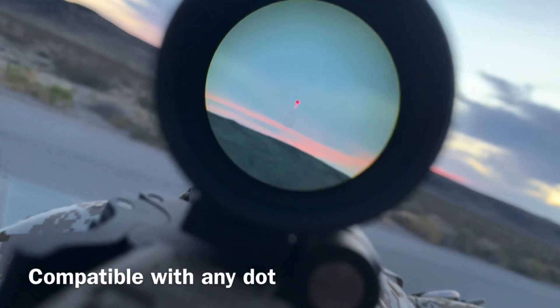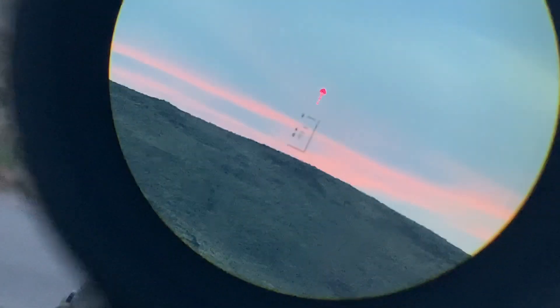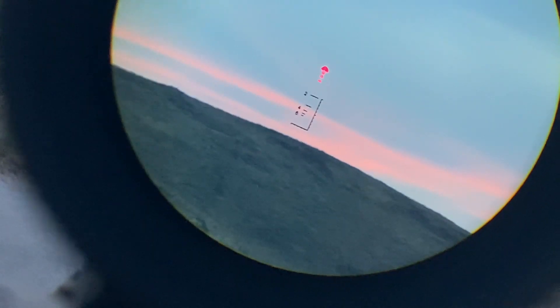You can use the turrets and move the reticle around so you can bring it closer to the dot, further from the dot, or wherever you want to place it.